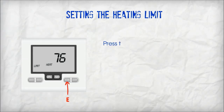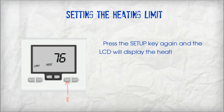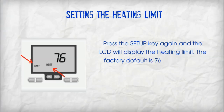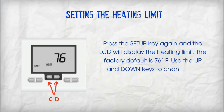Setting the heating limit. Press the setup key again and the LCD will display the heating limit. The factory default is 76 degrees Fahrenheit. Use the up and down keys to change the heating limit setting. If using a zone panel, it's recommended not to go above the factory default.